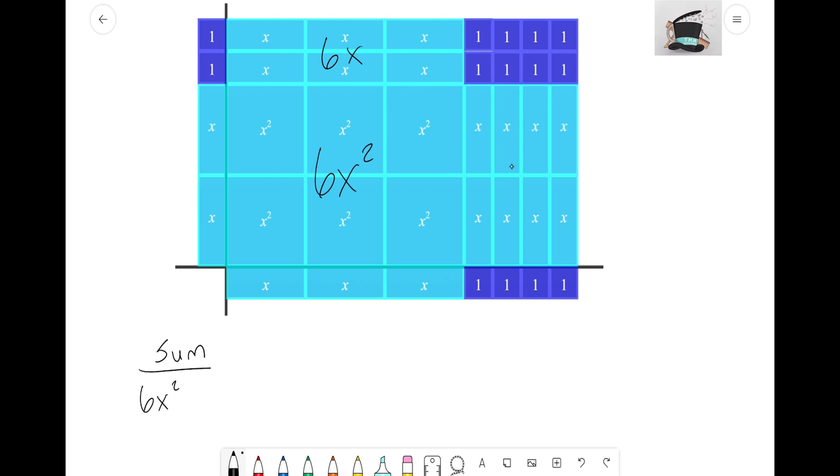Then hopefully we could see up top here we are going to have six x tiles, but down here we're also going to have eight x tiles. So together, we got to make sure we add those two pieces together. Our sum would have a total of 14x.